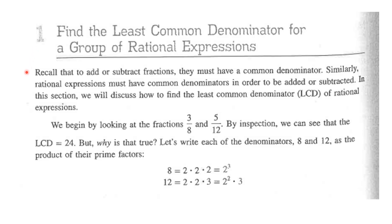We're going to start by recalling what we did with fractions. Recall that to add or subtract fractions, they must have a common denominator. Similarly, rational expressions must have common denominators in order to be added or subtracted. So we're going to discuss how to find the least common denominator, LCD, of rational expressions.